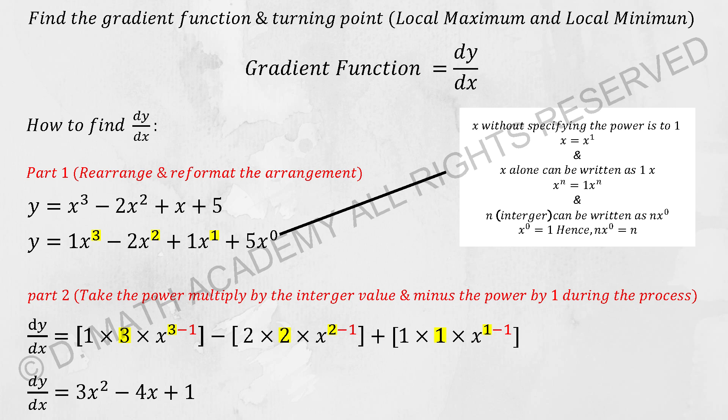Our equation from x cubed minus 2x squared plus x plus 5 will now be changed into 1x to the power of 3 minus 2x to the power of 2 plus 1x to the power of 1 plus 5x to the power of 0.